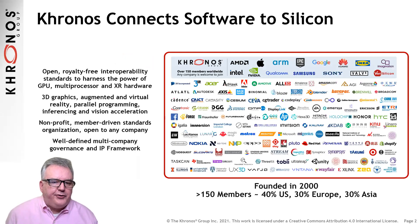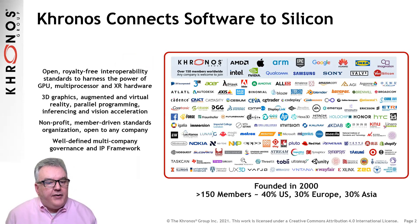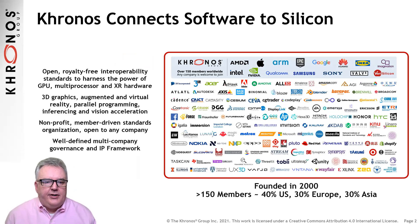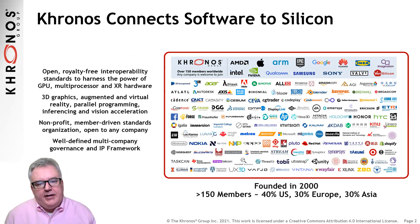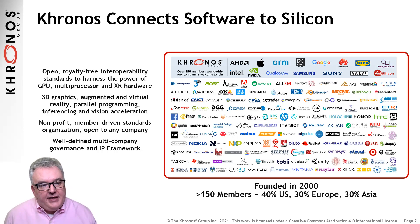If you haven't come across Kronos before, we are an open consensus-based standards consortium, providing a safe place for the industry to cooperate and create interoperability standards that enable applications to access the power of 3D graphics, virtual and augmented reality, and parallel computation. Kronos is a non-profit organization, and all the standards we create are open and royalty-free for the industry to use. We have been developing open standards for over 20 years and have about 160 members, including everyone from the largest companies to small startups.